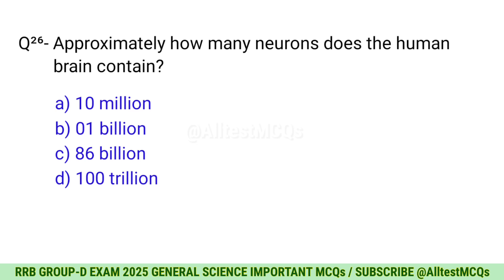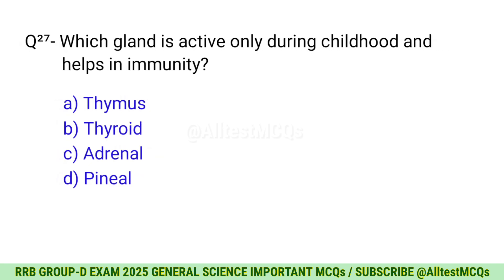Question 26: Approximately how many neurons does the human brain contain? Correct option is C, 86 billion. Question 27: Which gland is active only during childhood and helps in immunity? Correct option is A, Thymus.